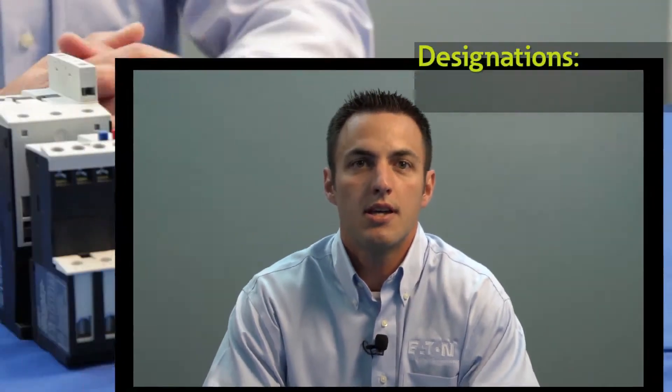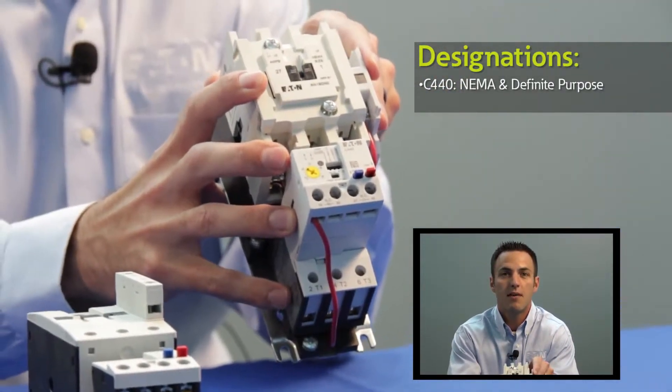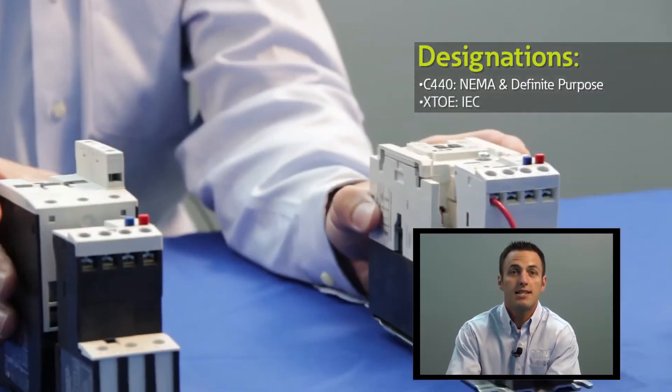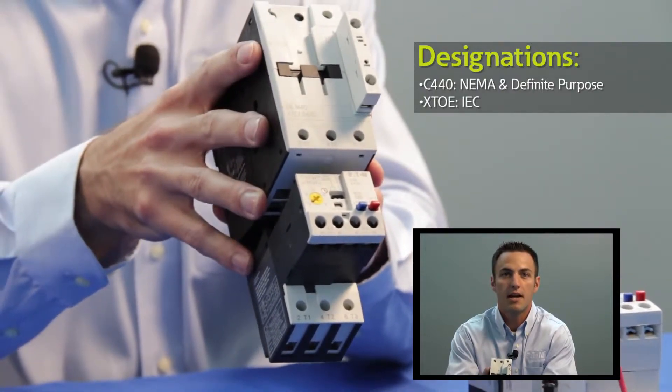Although it is a single platform, there are two different designations depending on the mounting configuration. C440 is used for NEMA and definite purpose mounting applications, and the XTOE designation is used for IEC mounting applications to XT contactors.